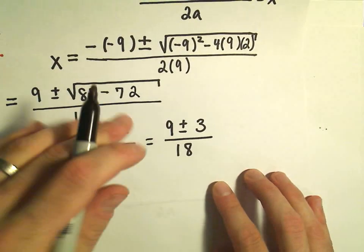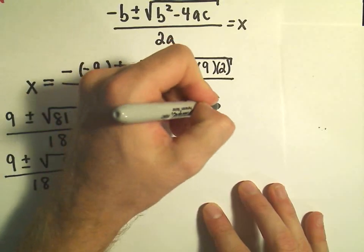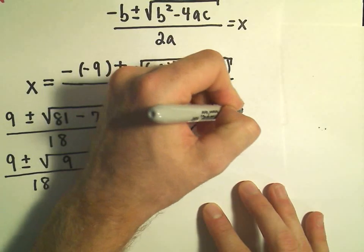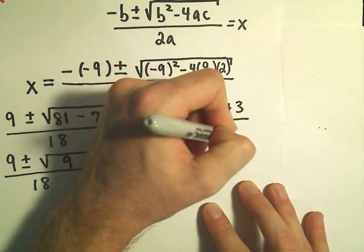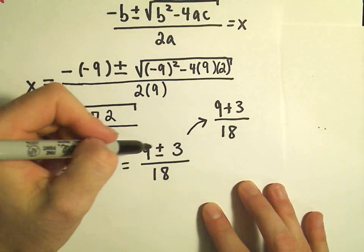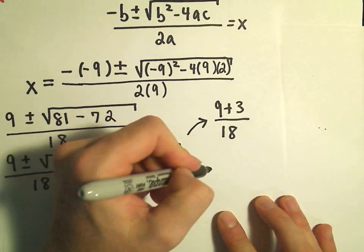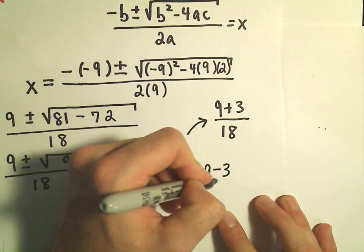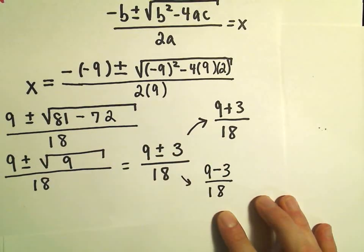Maybe I can just squeeze it all in here. It says one of the solutions is we take 9 plus 3 over 18. So 9 plus 3 over 18. And it says the other solution is going to be 9 minus 3 over 18.